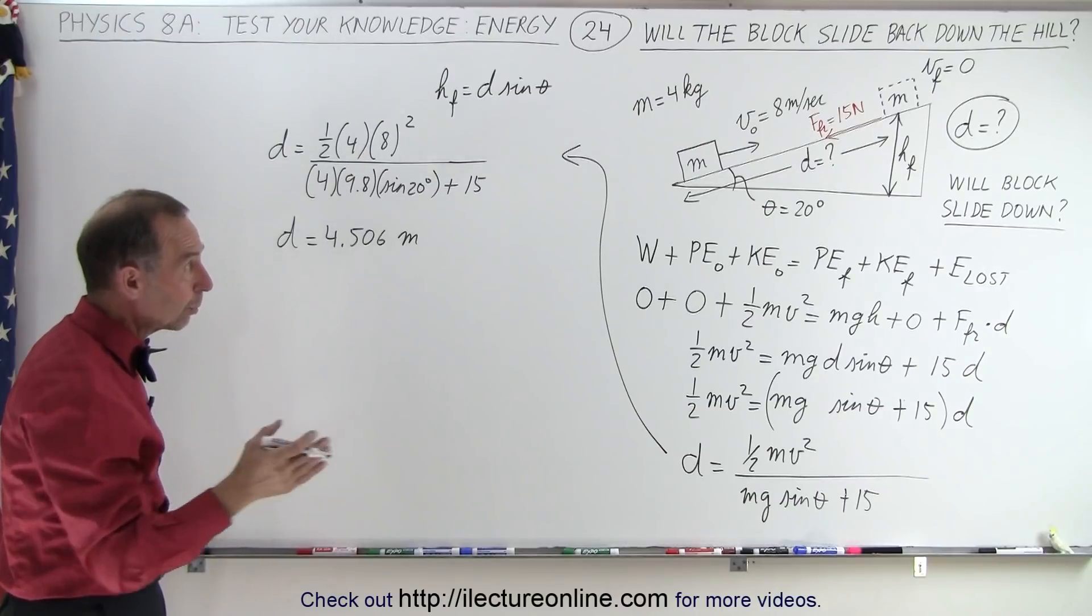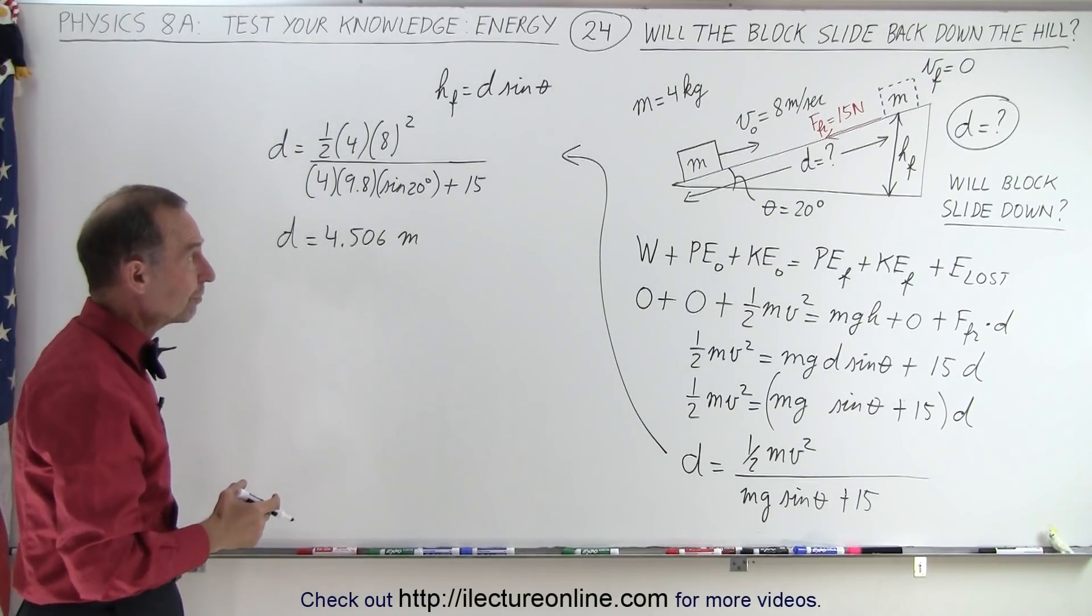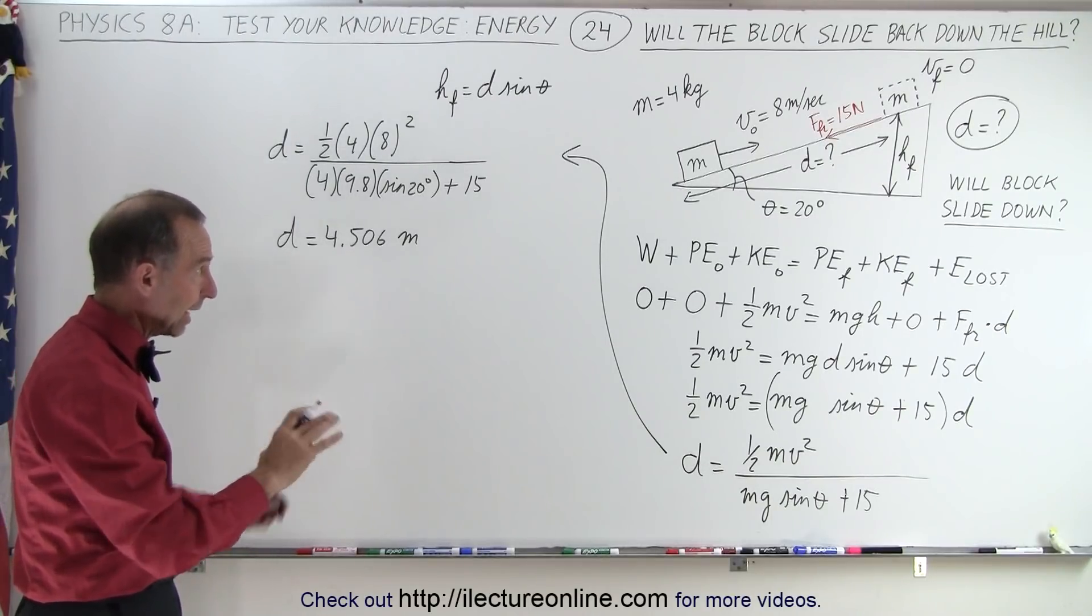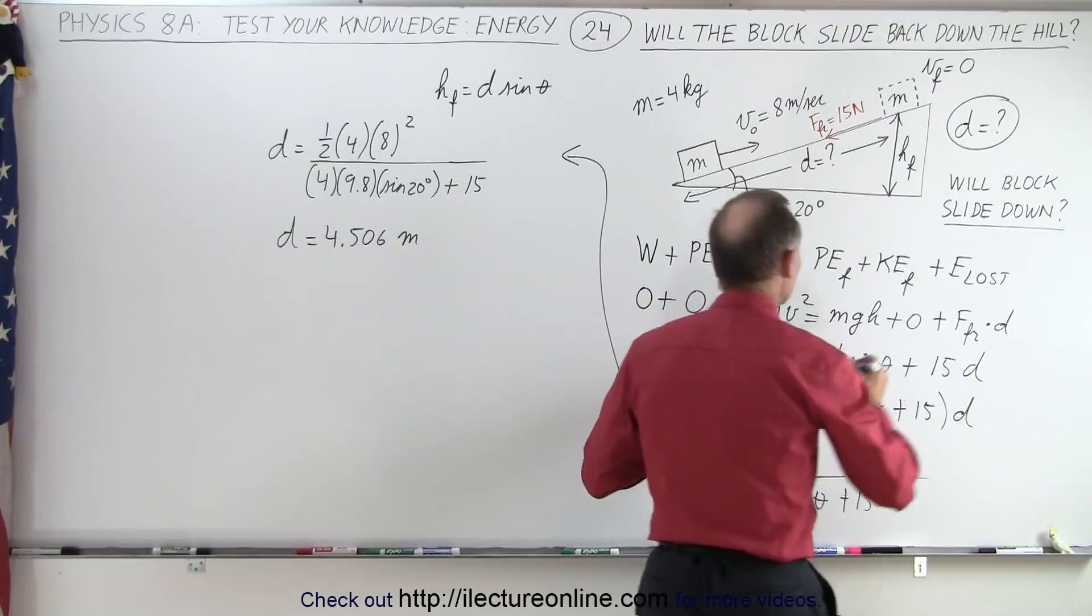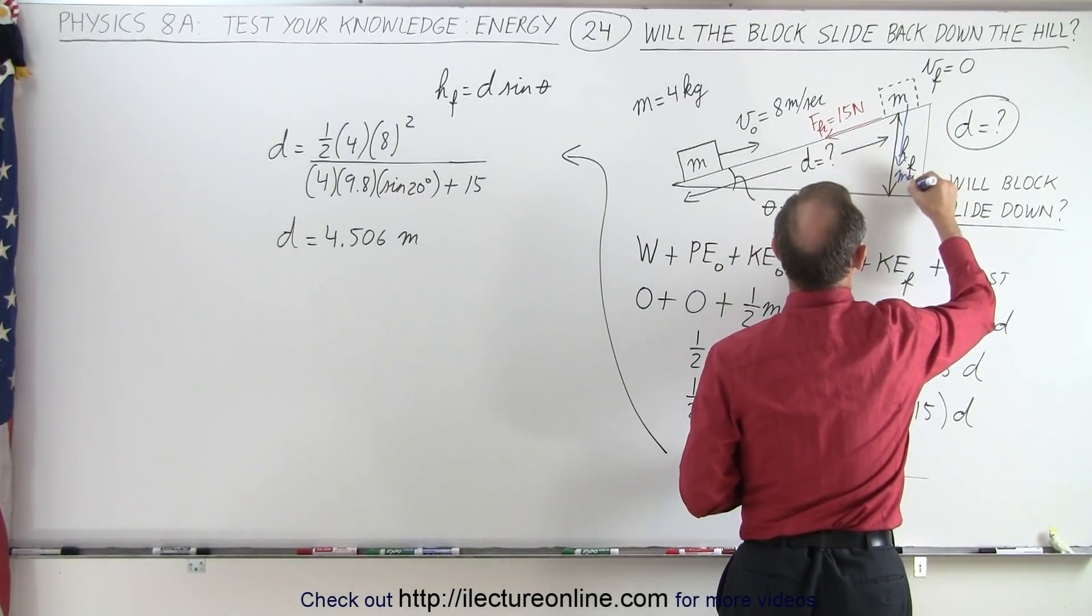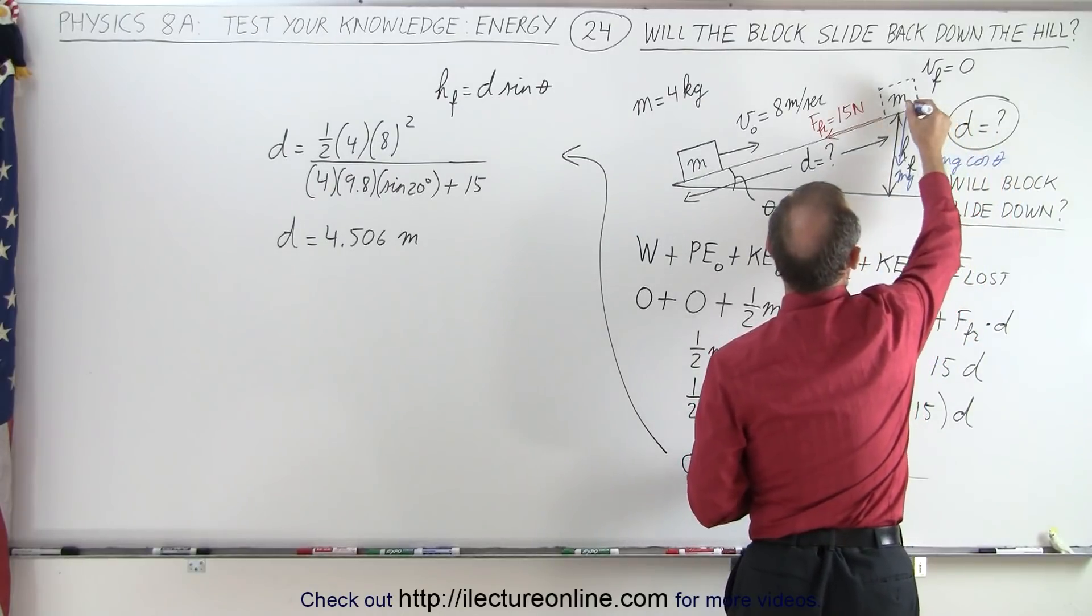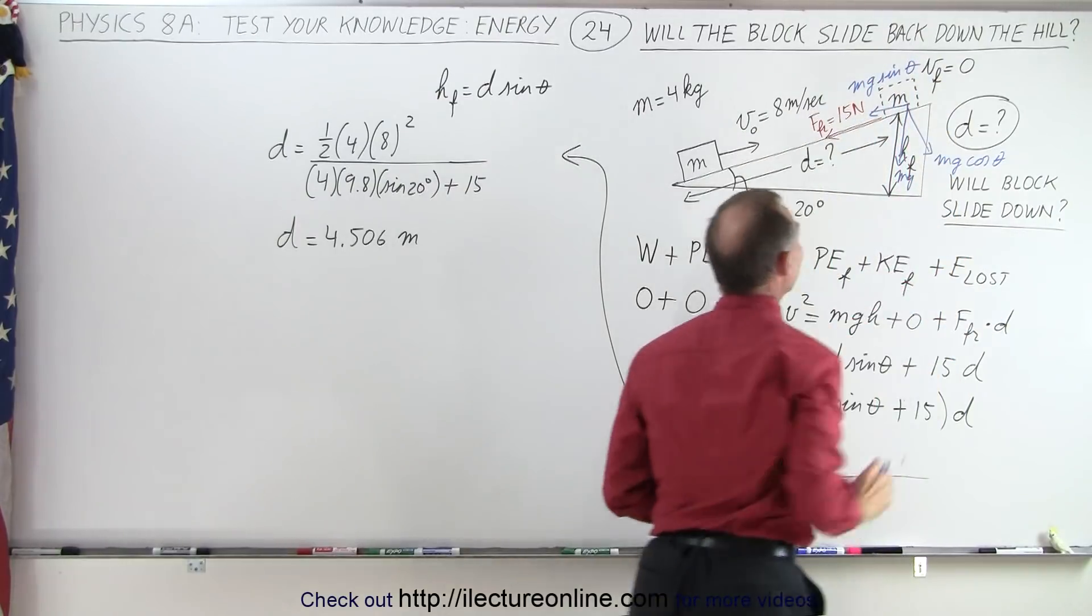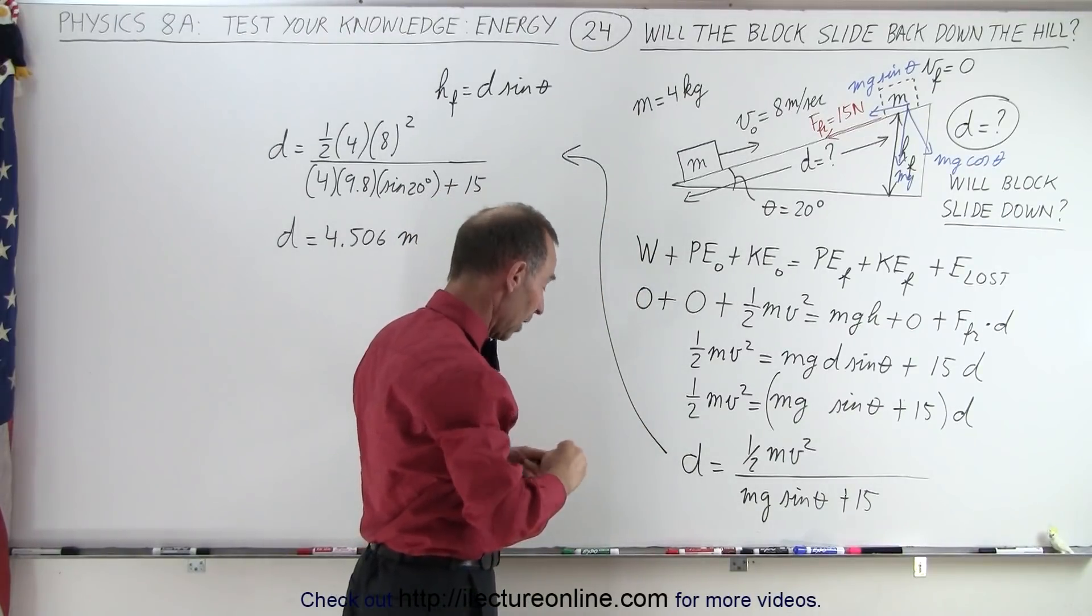Now will the block begin to slide back? We know the friction force is 15 newtons. That would be the kinetic friction force, which means the static friction force will be a little bit higher, but let's say it's the same. So how do we determine that? Notice we have an mg acting downward. We have the perpendicular component, which is mg cosine theta, and we have the parallel component, which is mg sine theta. And if mg sine theta is larger than the friction force, the block will slide.